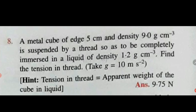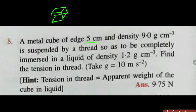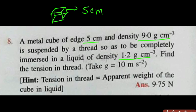We can go to number 8 now. A metal cube of side 5 centimeter, so all the sides are equal to 5 centimeter, and the density of that cube is 9 gram per centimeter cube, is suspended by a thread and completely immersed in a liquid of density 1.2 gram per centimeter cube. Find the tension in the thread. The tension is equal to the apparent weight of the cube in the liquid.